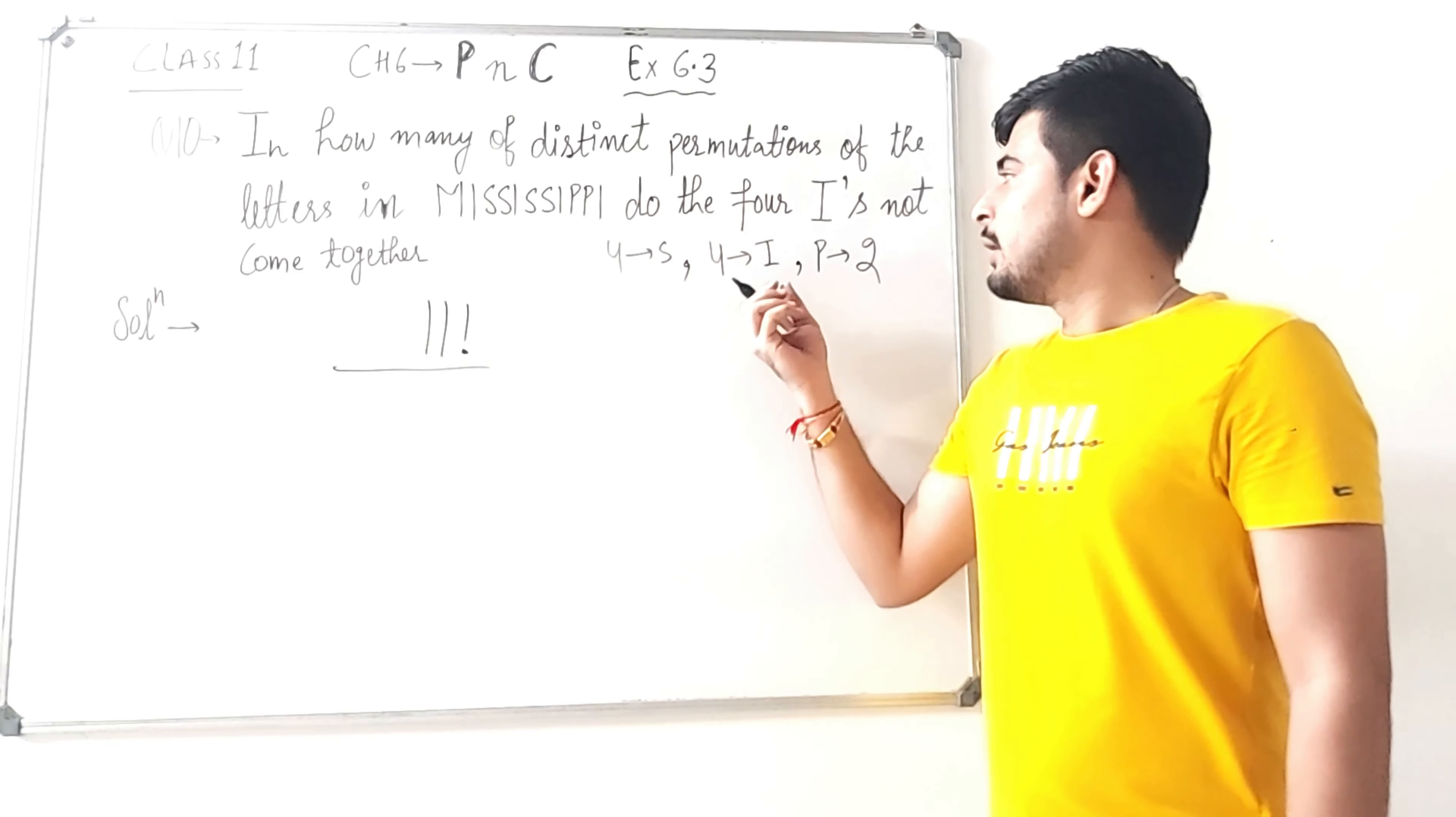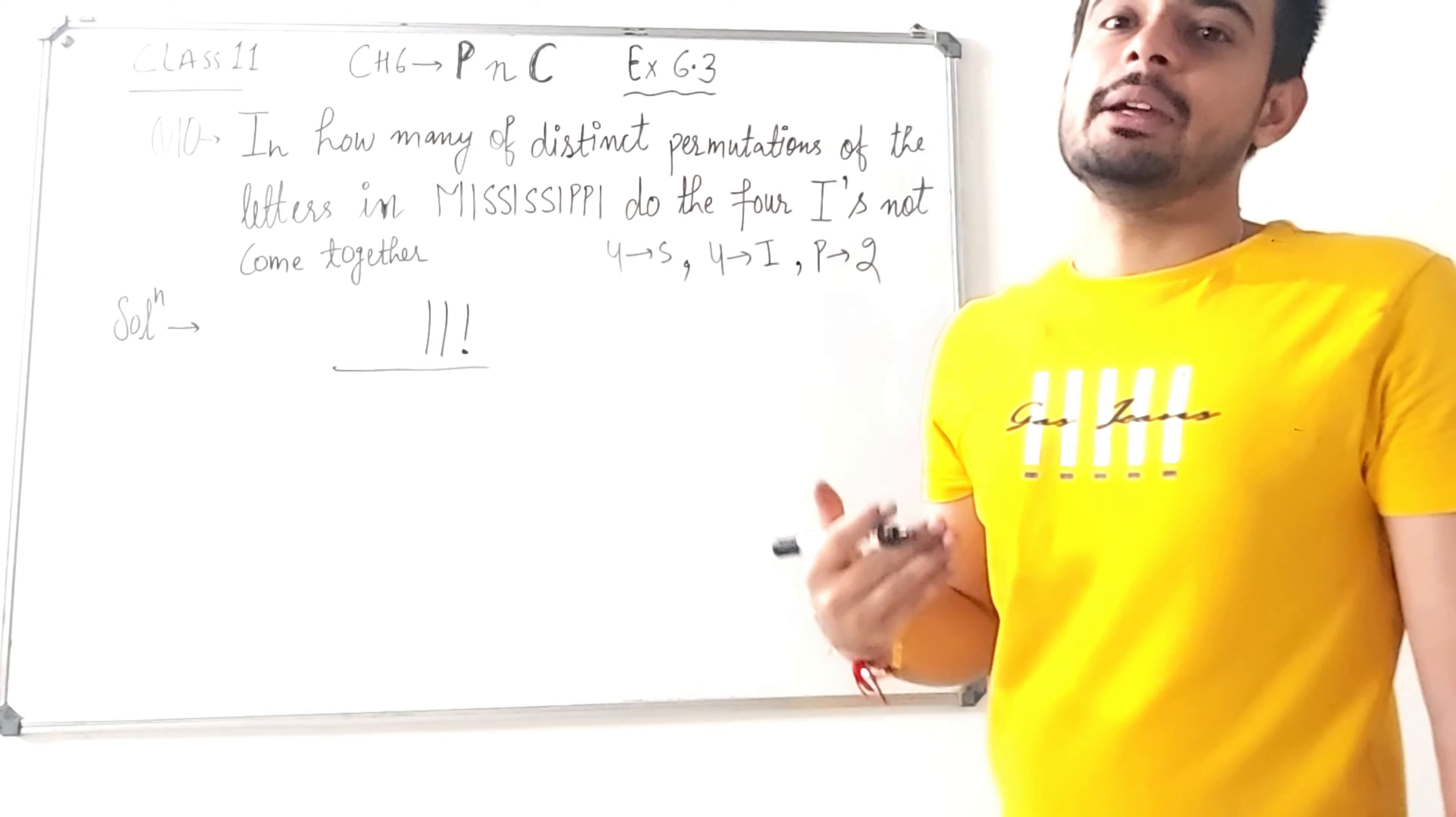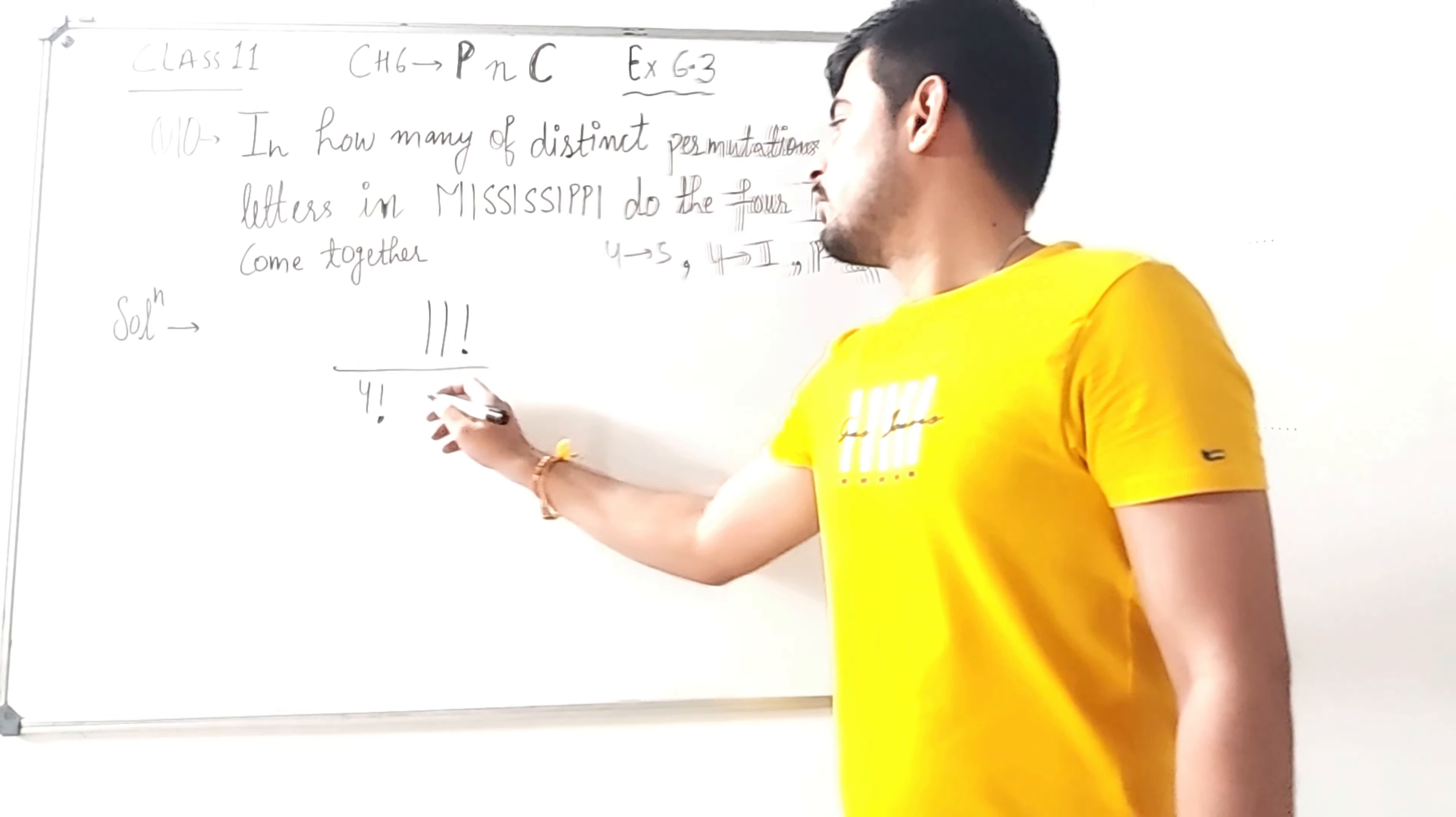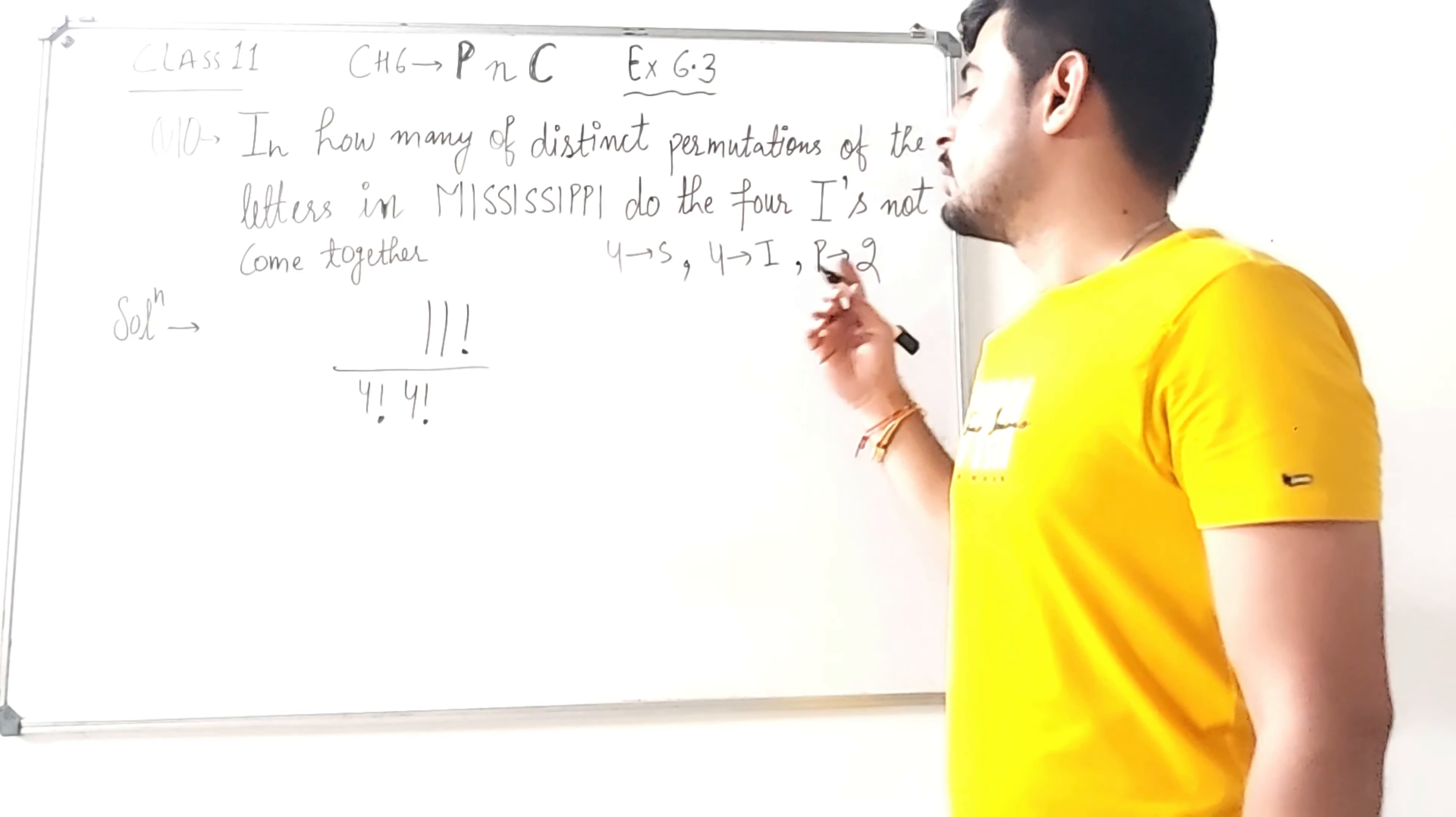4 I, 4 S, and 2 P's. So here we have 4 factorial and 4 factorial because 4 I's are the same kind, and 2 factorial because P's also got 2 of the same type.